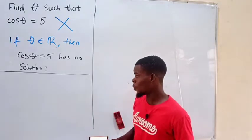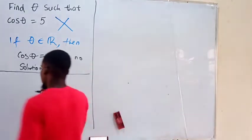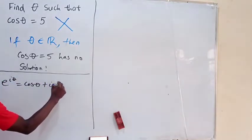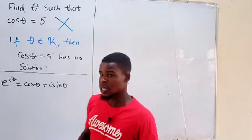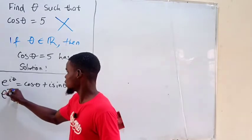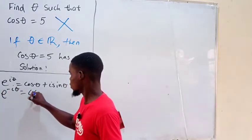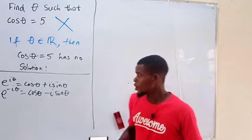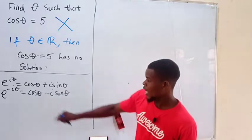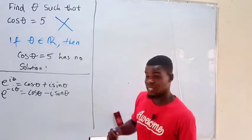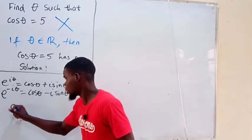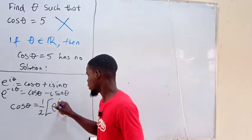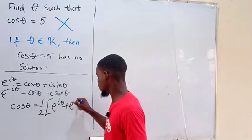To do that, I'm going to recall a definition of cosine using complex numbers. When we talk about the Euler form of a complex number, we can write e to the iθ as cosine of theta plus i sine theta. We can also get from the negative exponent: e to the negative iθ equals cosine of theta minus i sine theta. By adding these two together, we get 2 cosine theta, which tells us that cosine of theta equals one half times e to the iθ plus e to the negative iθ.